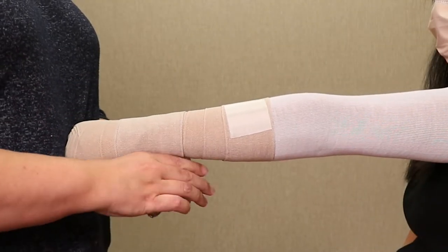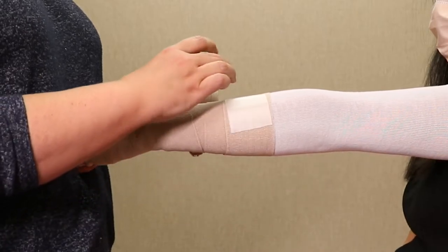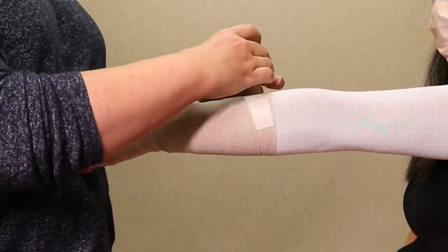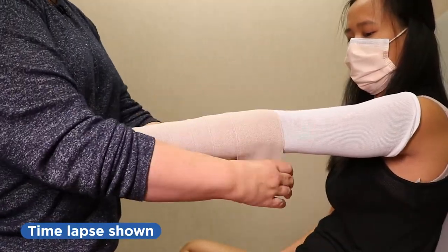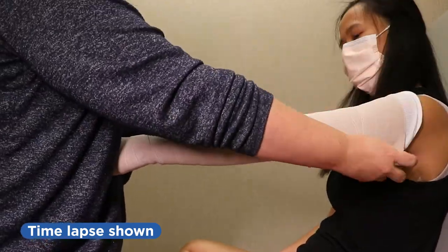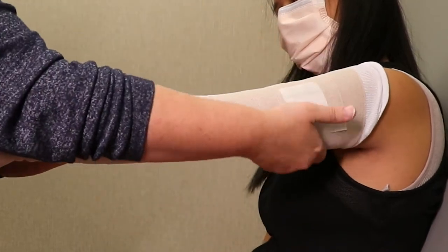Begin your second bandage at the wrist and overlap by half as you continue up the arm. Secure the bandage with tape at the end.